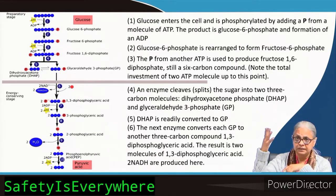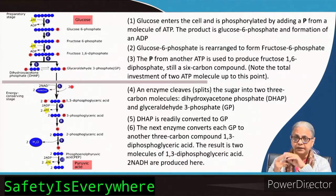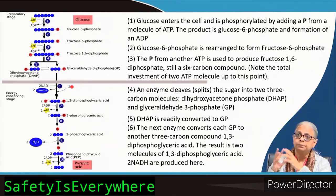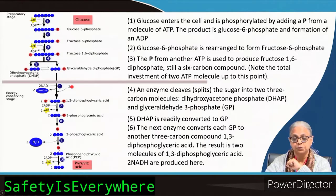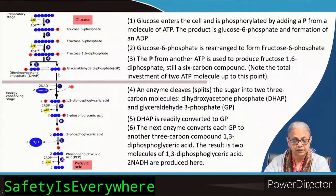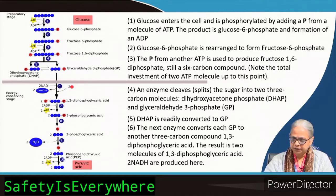Fructose 1,6-diphosphate is then cleaved into two C3 compounds. Each step of these reactions is mediated by a specific enzyme — we are not interested in that level of detail, but you can refer to the textbook. We have two C3 compounds: dihydroxyacetone phosphate (DHAP) and glyceraldehyde 3-phosphate (G3P). These two are interchangeable, and DHAP is readily converted to G3P.